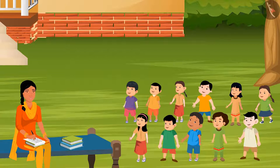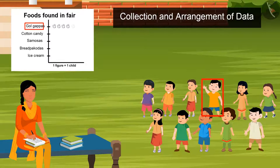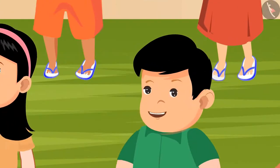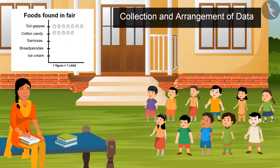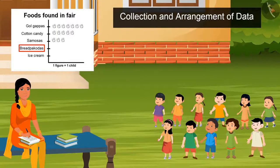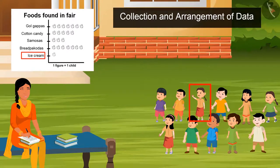We'll also get late while playing there. So let's collect some data related to foods. Now tell me who all wants to enjoy Gol Gappa? 1, 2, 3, 4, 5, 6, and 7. Who all wants to eat cotton candy? 1, 2, 3, 4, and 5. Sister, I have cavities, so I can't eat sweet things. 1, 2, 3, 4, 5, 6, 7, and 8.